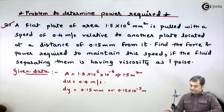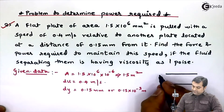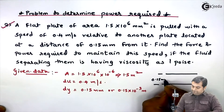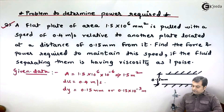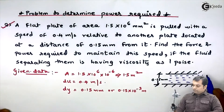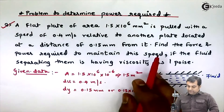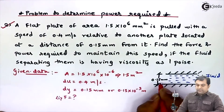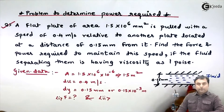Here we have two plates. The distance between them is 0.15 mm, and between these two plates the fluid is flowing. We have to find the force and power required — how much force is needed so that the fluid will flow, and how much power is required.